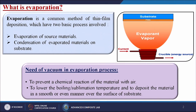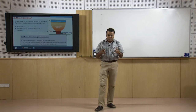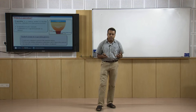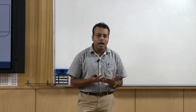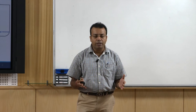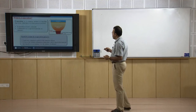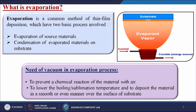We generally do this process in a vacuum to prevent chemical reactions of the material with air, to lower the boiling or sublimation temperature, and to deposit the material in a smooth and even manner over the surface of the substrate. When we generate the vapor, that vapor can absorb oxygen or moisture, causing improper coating and increased temperature. So to reduce these effects we do this experiment in a closed or vacuum chamber. In the figure on the right-hand side, we see a simple example where a crucible is heated by applied current, generating vapor that deposits directly onto the substrate material, forming a film on top.